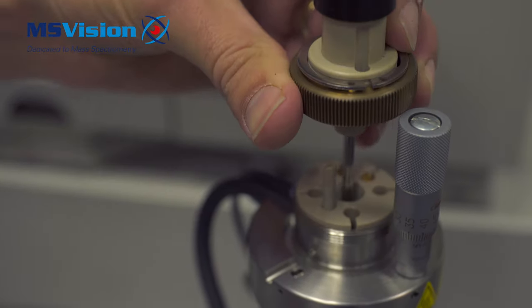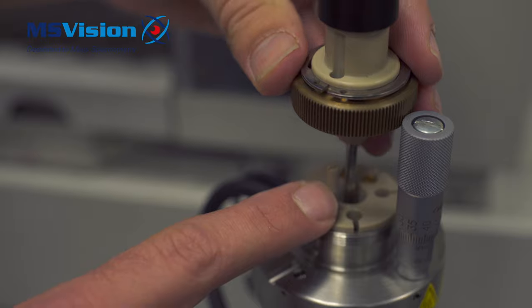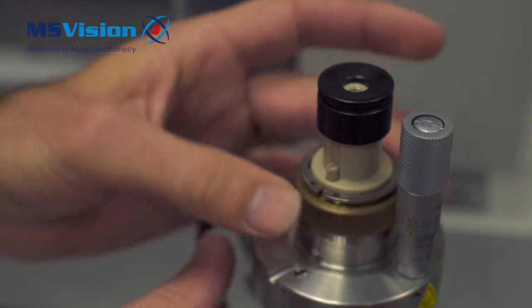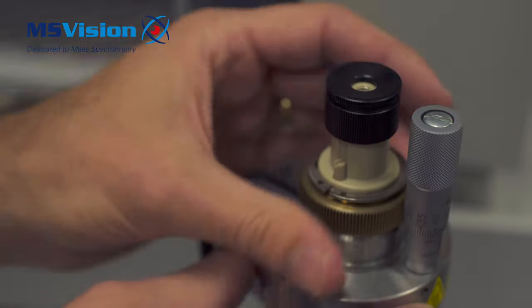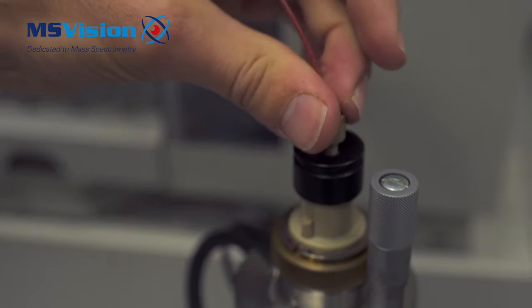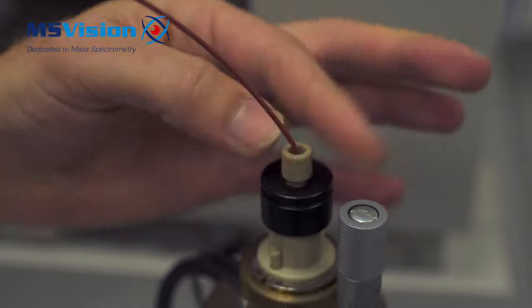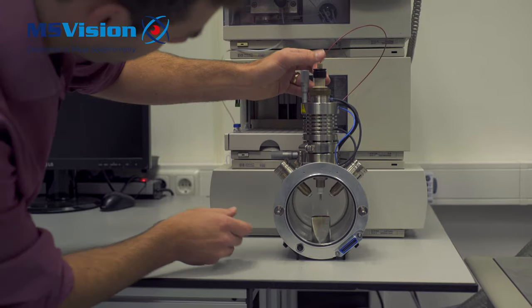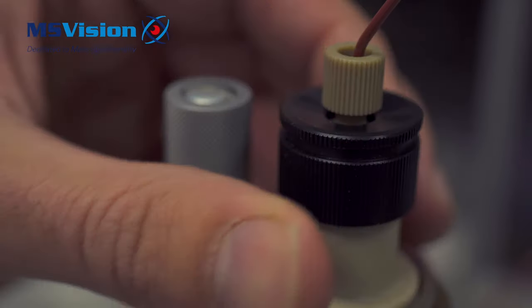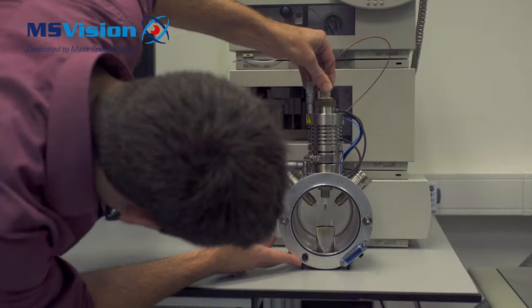Put the probe back into the source and tighten the brass nut. Now adjust the black cap and have the capillary protruding by 1-2mm.